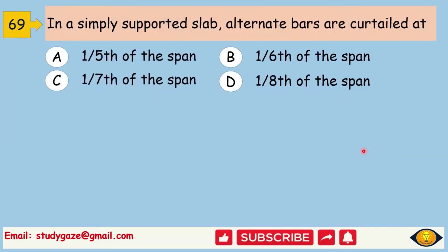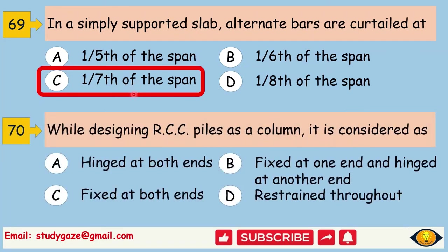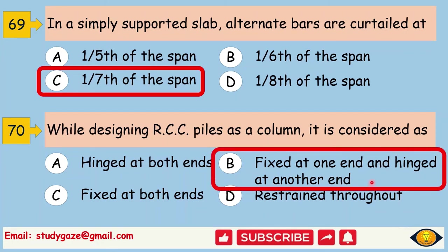In a simply supported slab, alternate bars are curtailed at 1 by 7th of the span. While designing RCC piles as a column, it is considered as fixed at one end and hinged at the other end.